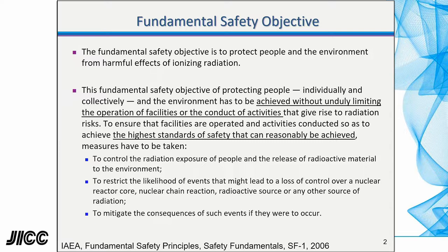Measures have to be taken to control the radiation exposure of people and the release of radioactive material to the environment — these are preventive measures, normally related to normal operation. And to restrict the likelihood of events that might lead to a loss of control over a nuclear reactor core, nuclear chain reaction, radioactive source, or any other source of radiation — this is related to accident conditions. Furthermore, to mitigate the consequences of such events if they were to occur — this is mitigation of accidental consequences.